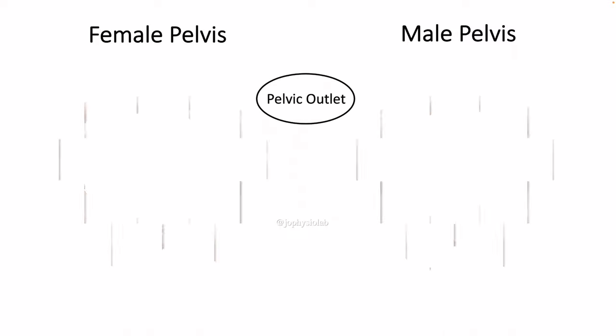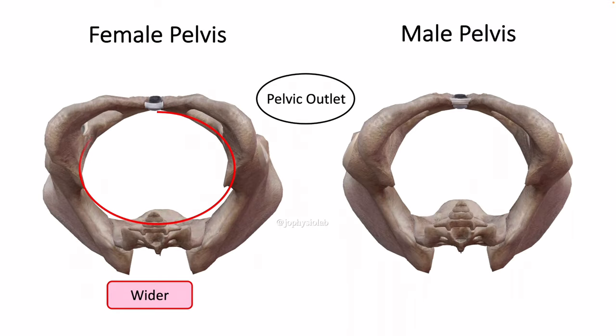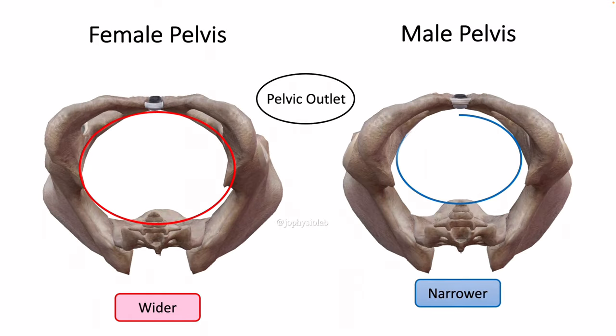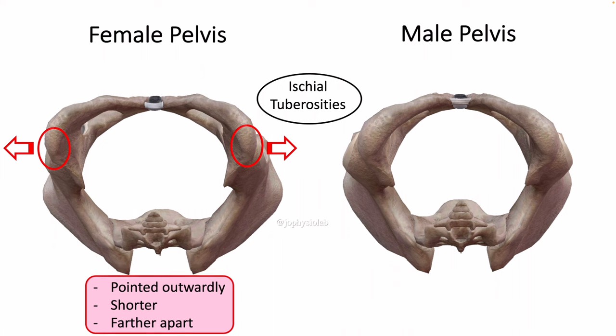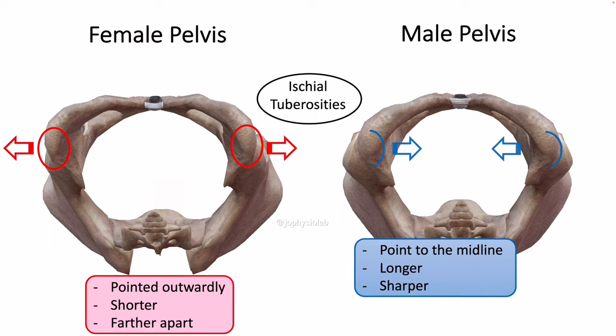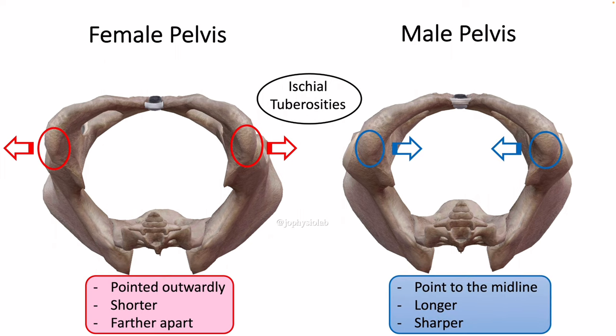The female pelvic outlet is larger and more oval-shaped than the male pelvic outlet, which is smaller. This allows for easier passage of the baby during childbirth. The distance between the ischium bones is smaller in males, causing the sides of the male pelvis to converge from the inlet to the outlet, whereas the sides of the female pelvis are wider apart.